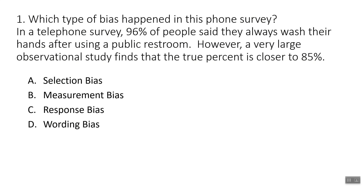So which type of bias happened in this phone survey? In a telephone survey, 96% of people said they always wash their hands after using a public restroom. However, a large observational study found that the true percent is closer to 85%. Hopefully you said this was response bias, because people are lying about their responses — saying they washed their hands when maybe they didn't get a chance for whatever reason.